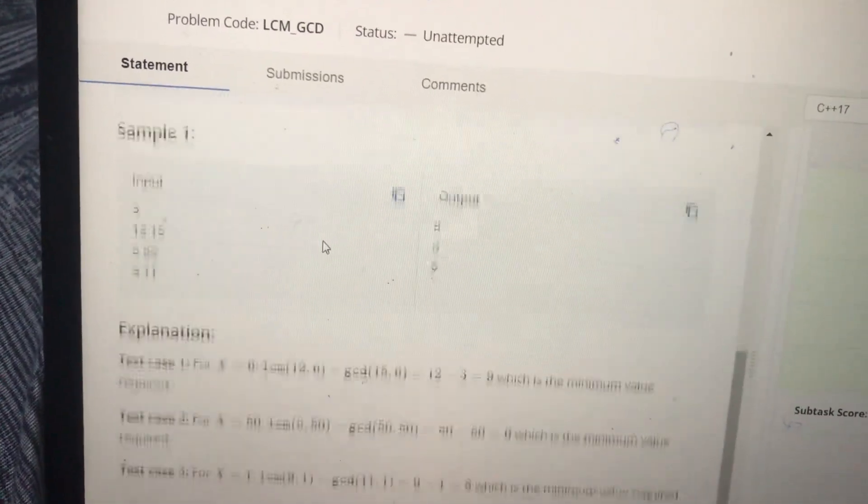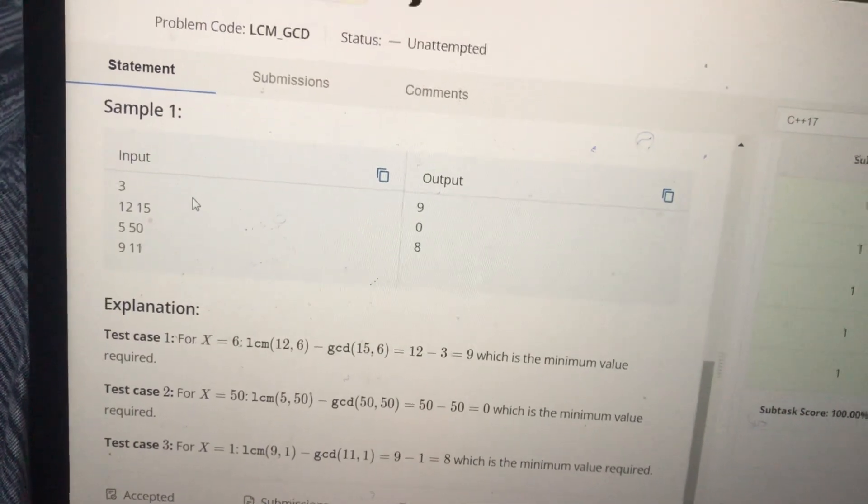According to which if we take LCM(A, X) minus GCD(B, X), then we should get the minimum value.